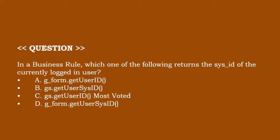Moving to our next one. In a business rule, which of the following returns the sys_id of the currently logged in user? You can read the given options. The correct answer is option C.